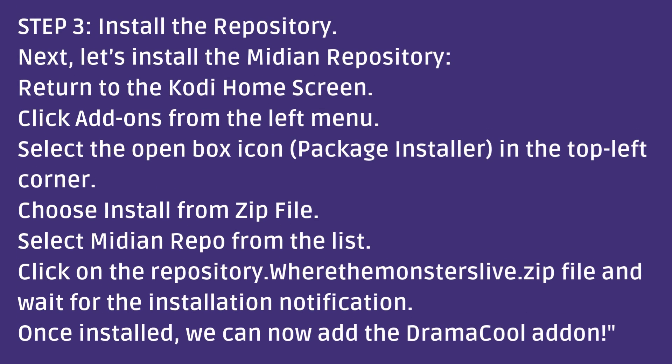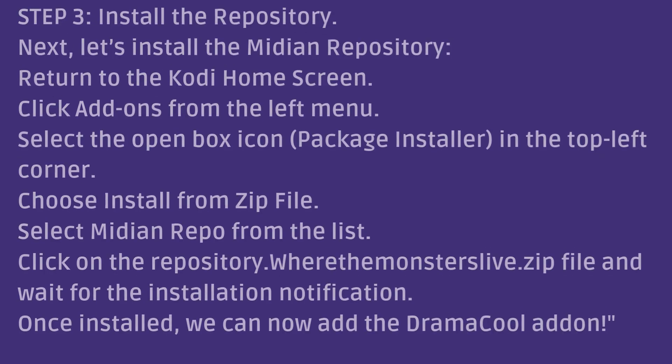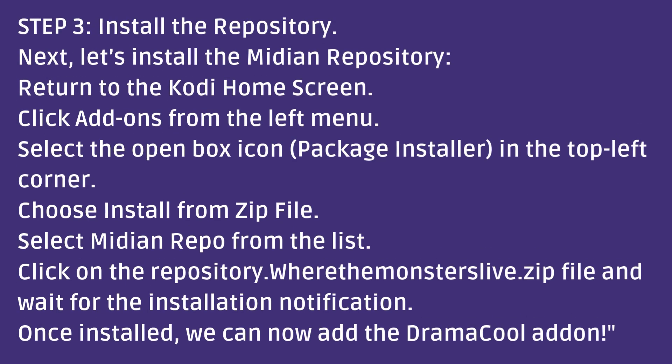Step 3: Install the Repository. Next, let's install the Midian Repository. Return to the Kodi home screen. Click Add-ons from the left menu. Select the open box icon — Package Installer — in the top left corner. Choose Install from Zip File. Select Midian Repo from the list. Click on the Repository — Where the Monsters Live — zip file and wait for the installation notification. Once installed, we can now add the Dramacool add-on.